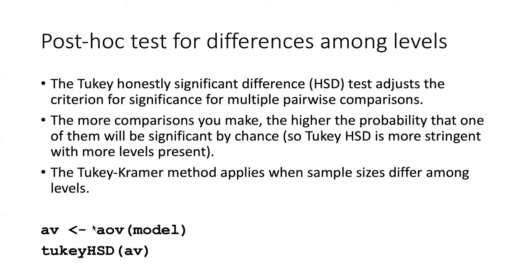In R, the Tukey HSD function automatically applies the Tukey-Kramer method if sample sizes are different. To carry out the Tukey test, you generate an ANOVA model object using the AOV function, and then pass that ANOVA object into the TukeyHSD function.